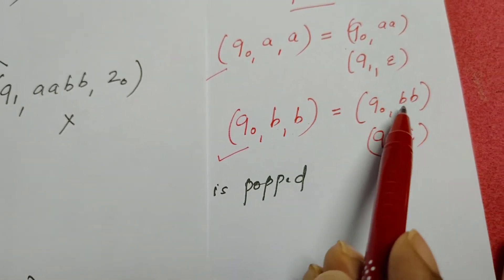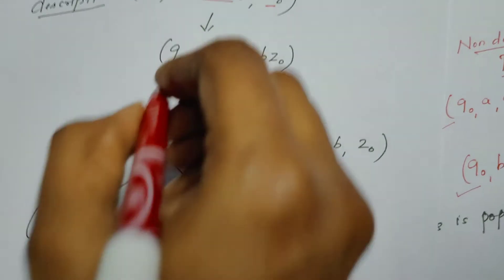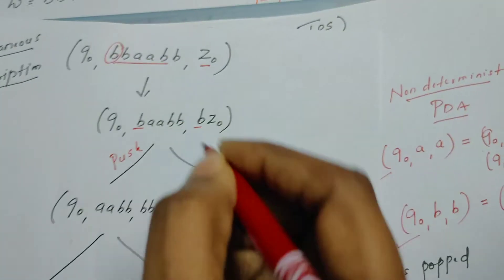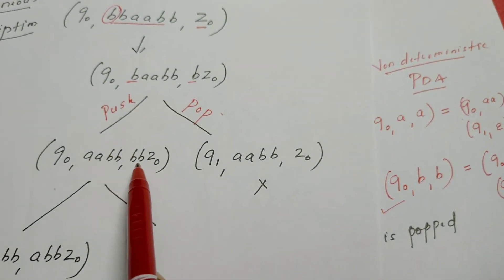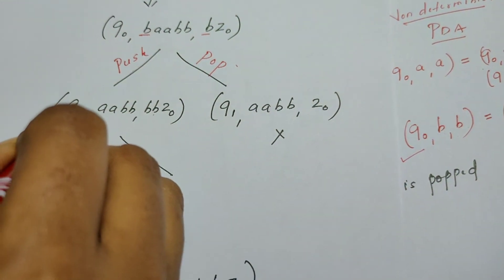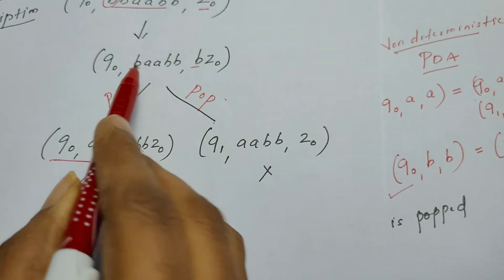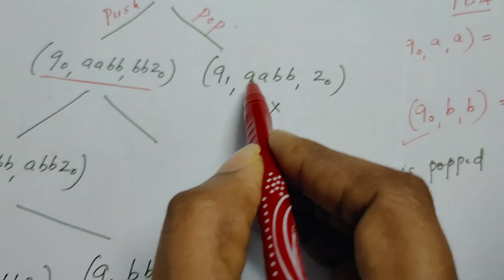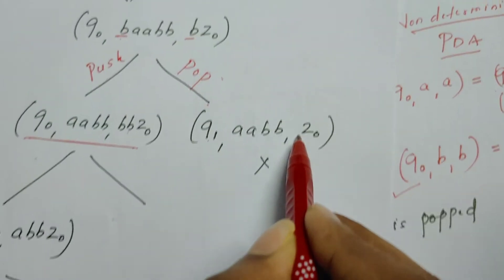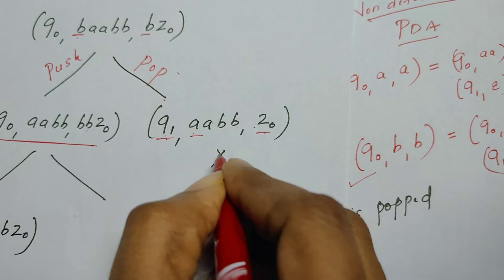At Q0, B, B the PDA either pushes B onto the stack or changes state to Q1 by popping whatever is at the top of the stack. The non-deterministic PDA explores both options — one time it tries pushing, another time popping. If B is pushed, that is one scenario. If it pops, it enters Q1; but from Q1, a, Z0, the PDA does not know how to react, so that path stops. It continues to explore the push choice.